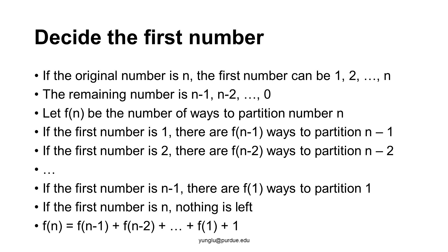If the first number is N−1, the remaining number is 1, so there are f(1) ways. If the first number is N, there is nothing left; since we allow the original number itself, this is counted as one way. The first number can be 1, 2, 3, all the way to N−1. Thus the number of ways to partition is the sum of f(N−1), f(N−2), f(N−3), down to f(1). The last case using N itself is counted as 1.